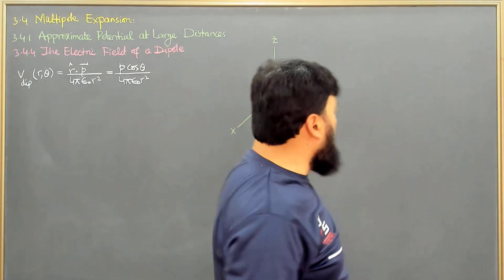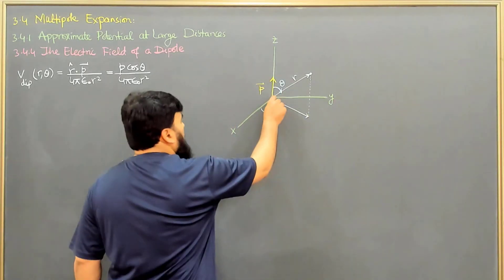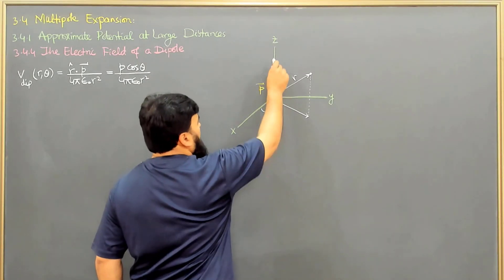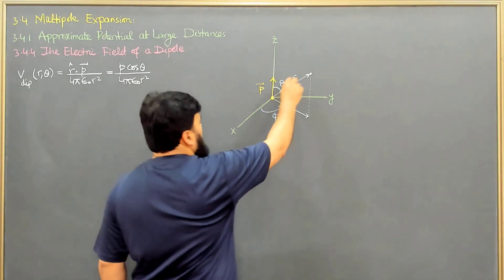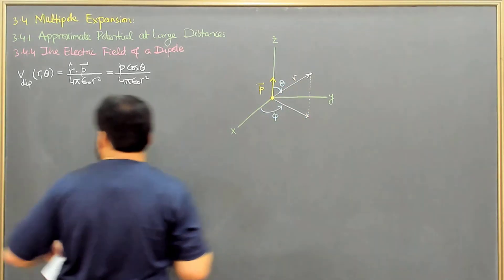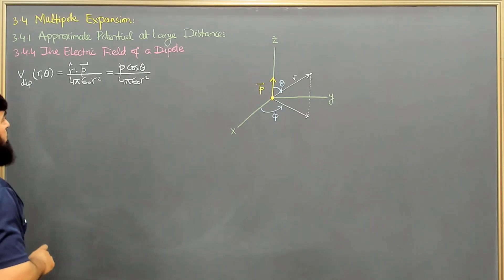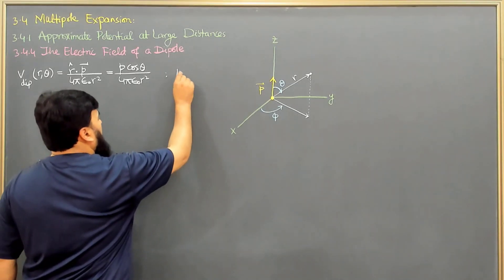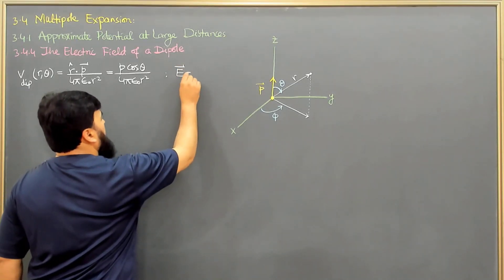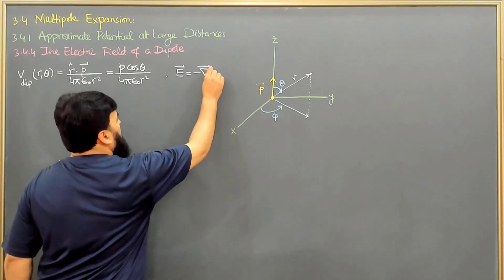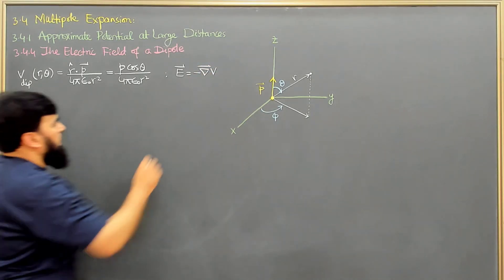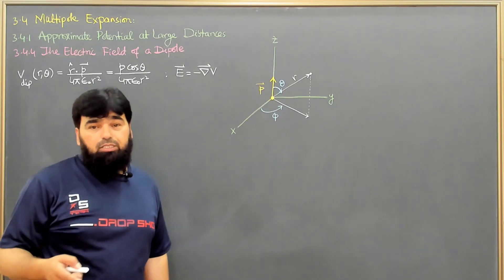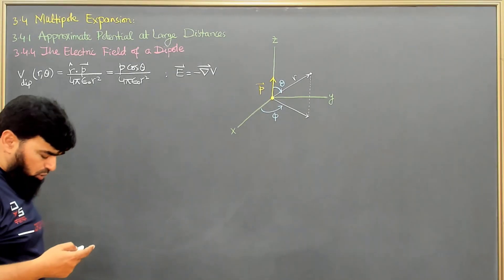Now let us consider the coordinate system. We have a dipole placed with its dipole moment along the z-axis, using R, theta, phi coordinates. To find the electric field from a potential, we use the equation that the electric field is the negative gradient of the potential. We will find this gradient in spherical polar coordinates.